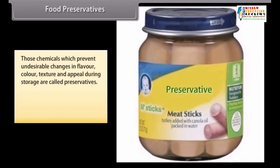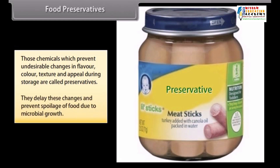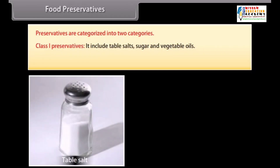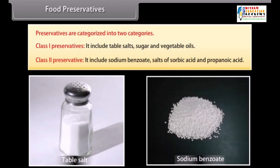Food preservatives: those chemicals which prevent undesirable changes in flavor, color, texture, and appeal during storage are called preservatives. They delay these changes and prevent spoilage of food due to microbial growth. Preservatives are categorized into two categories: Class 1 preservatives, which include table salt, sugar, and vegetable oils; and Class 2 preservatives, which include sodium benzoate, salts of sorbic acid, and propanoic acid.